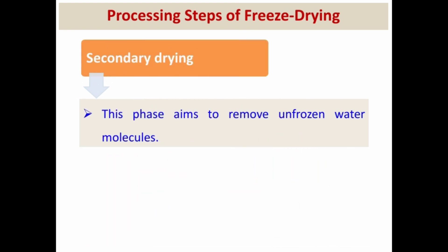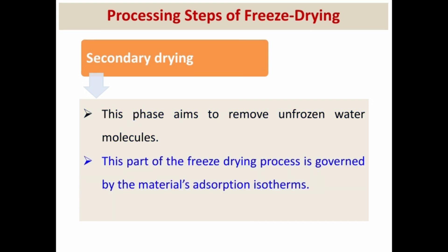The fourth step of freeze drying is secondary drying. This phase aims to remove unfrozen water molecules. This part of the freeze drying process is governed by the material adsorption isotherm.